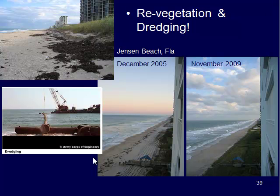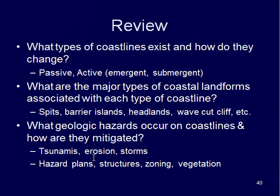These are some of the hazards and ways we have tried to mitigate or fix some of the problems. To review week three: you should be familiar with the different types of coastlines and how they change — what is meant by a passive, active, emergent, or submergent coastline, and the features associated with each. You should understand what processes form those features, what hazards exist at each location, where we have tsunami risk — east coast versus west coast — and some of the plans that go into mitigating these hazards. We'll play around with some of these things in lab this week. Enjoy and we will see you soon.